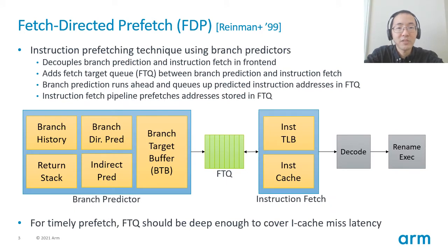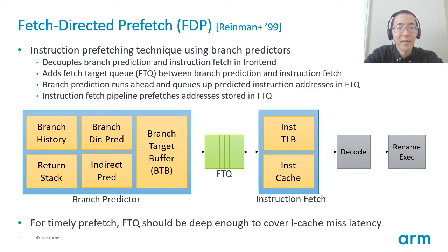FDP was originally proposed in 1999, also called Fetch-Directed Instruction Prefetch or Branch-Predictor-Directed Prefetch. FDP decouples the front-end pipeline into branch predictor and instruction fetch, and a Fetch-Target Queue (FTQ) is added between them. By using FTQ, the branch predictor can run ahead without waiting for instruction fetch. Instruction fetch picks the predicted fetch address from FTQ and probes the instruction cache tag. If the address misses the instruction cache tag, it is immediately sent to memory as a prefetch request. For timely prefetch, FTQ should be deep enough to cover instruction cache miss latency.